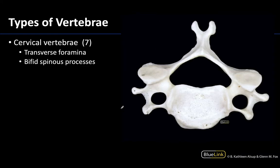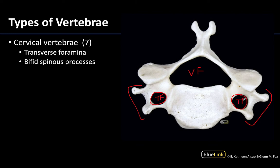Let's talk about how we're going to be able to identify a cervical vertebrae from the rest. I find this one the easiest to identify because of these giant foramina right here. These are not the vertebral foramen — all vertebrae have that, which is where the spinal cord is traversing. But right here in these transverse processes, which are quite small in the cervical vertebrae, you're going to have these transverse foramina. This allows for the vertebral artery, a branch of the subclavian artery, to ascend up through the neck to make its way to the brain, making it one of the major suppliers of the brain.